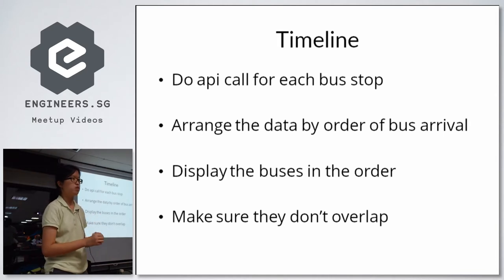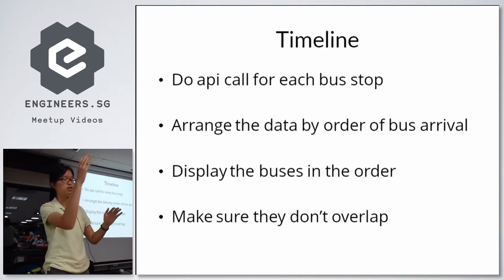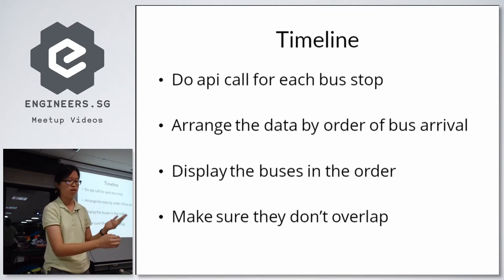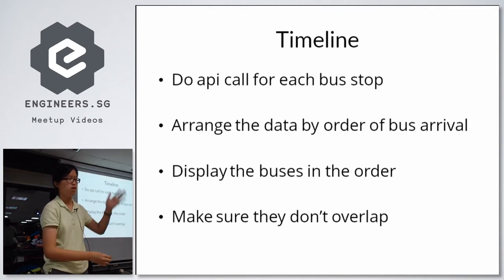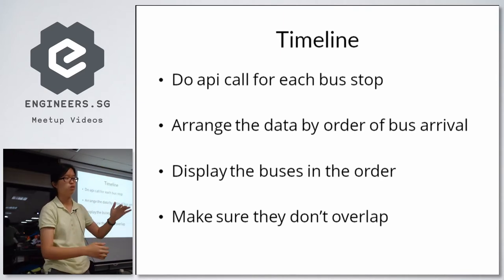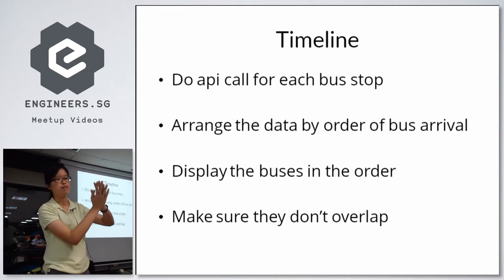The LTA API gives you data about bus stops — the bus stop code, every single bus service, the next three buses that are going to come, when they are going to come, how packed the bus is, the bus operator, and everything. I then had to look through all of that, arrange the buses by when they will arrive, display them in order, and also make sure that if buses are coming at the same time, they don't overlap and become one bus.